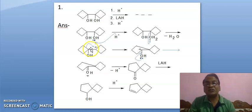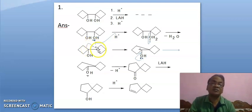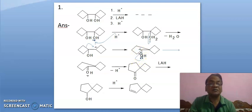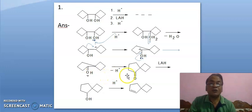Now, we need to develop positive charge here. This bond will shift in this fashion, leading to positive charge here. To develop positive charge here, this bond will break in this fashion, leading to positive charge here. Further, this lone pair of electrons shifts in this fashion and this carbocation is stabilized, leading to oxonium ion. And now this proton is eliminated, leading to this ketone.